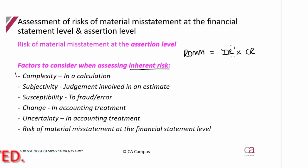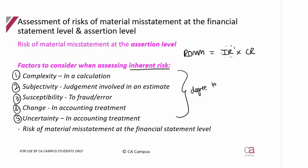We look at a few factors: one, complexity — is there a complex calculation or complexity in recording this balance or transaction? Two, subjectivity — is there judgment in determining the value? Three, susceptibility to fraud. Four, has there been a change in the way they record this or a change in accounting treatment? Five, is there any uncertainty around how this balance or class of transaction should be determined? Those five factors give the degree of susceptibility to misstatement.